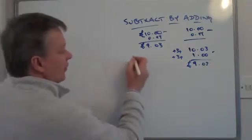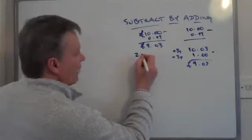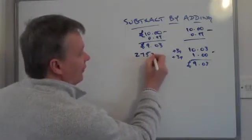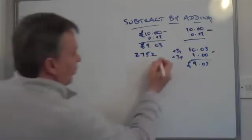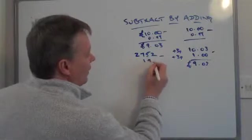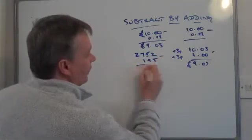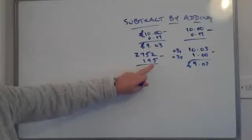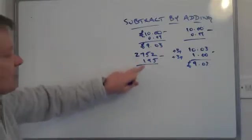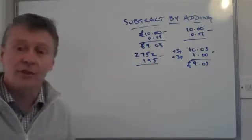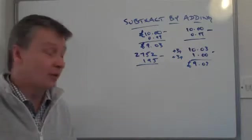So let's say if I've got something a little bit bigger, I've got 2,752 and I'm taking away 195. What I'm going to do is I'm going to add 5 onto that bottom and 5 onto the top. So the 5 on the bottom becomes 200 because it's just easier to take 200 away.